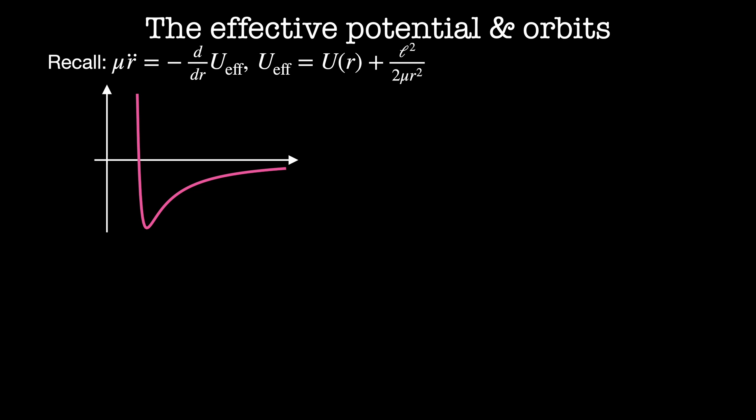Since energy is conserved in this system, we can analyze this the same way we would a regular potential energy landscape. Imagine starting with a total energy E1 which is greater than zero. This corresponds to an unbounded orbit, because there is only one turning point — the distance of closest approach, where there is all potential and no kinetic energy. This orbit is called unbounded.